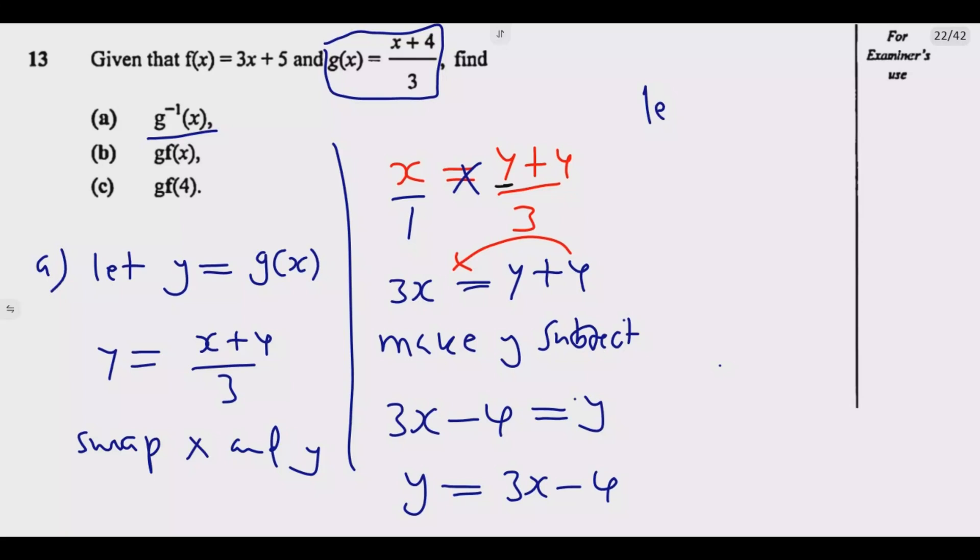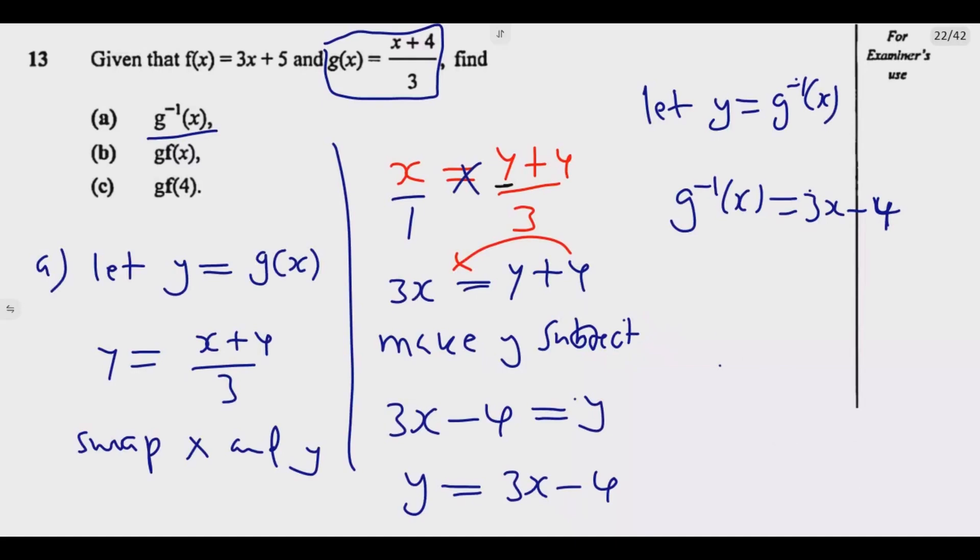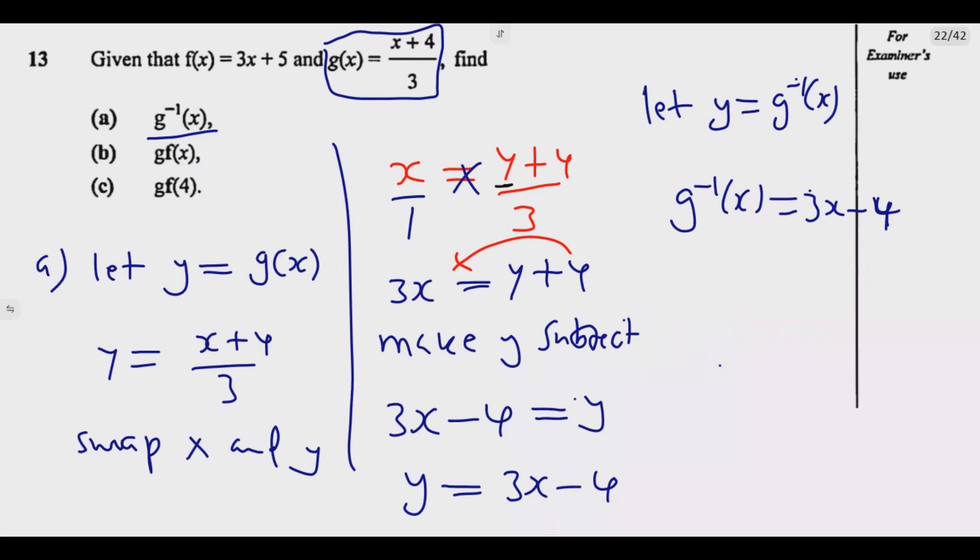Then I let y equals g inverse of x at that point. So this tells me that g inverse of x equals 3x minus 4. That's what it tells me. So if I come here, I'm going to substitute now. So g inverse of x equals 3x minus 4, like that. Then we are good to go for the first one.